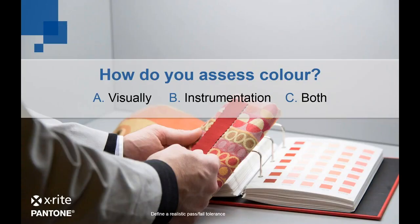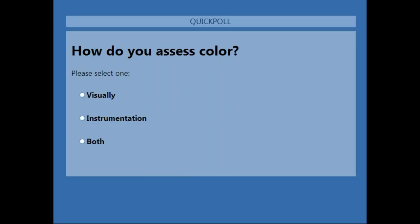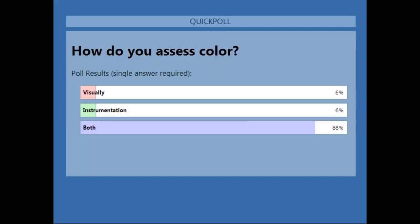First question to our attendees: how do you assess color? Are you doing it visually, using instrumentation, or are you doing a combination of visual and instrumental color assessment? We launched the poll question and gave everyone a few seconds to answer. Closing the poll now — we have 88% using both, 6% visually only, and 6% instrumentation only.